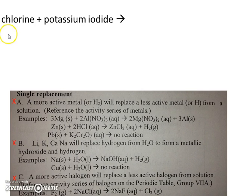Let's examine our reactants. We have chlorine plus potassium iodide. Potassium is, of course, a metal, but chlorine and iodine are both halogens.